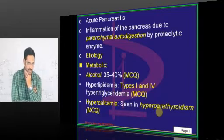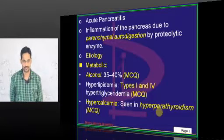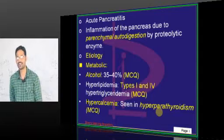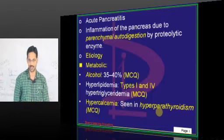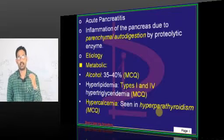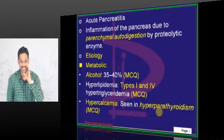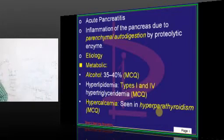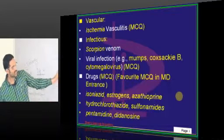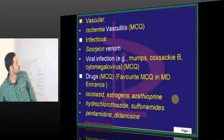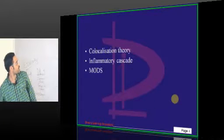Trauma is the most common cause of pancreatitis in children — children don't drink alcohol and rarely have gallstones. Other causes include snake venom and other toxic substances, and drugs. Please remember drugs that cause pancreatitis — estrogens, isoniazid, and others. A definite exam question: which of the following drugs will not cause pancreatitis?